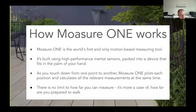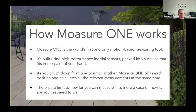A question we get asked a lot is how far you can measure if you have to put it down every six to eight seconds. The answer is it's literally about how far you're prepared to walk. The longest measurement I've ever done was about a kilometer — just over half a mile — walking around the edge of a large logistics park. That took about 20 minutes, but people measure much bigger areas than that.